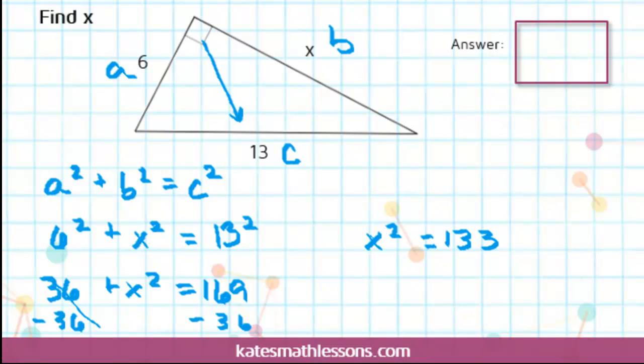To undo squaring something, you take the square root. So we can square root both sides. That gives us the square root of 133.